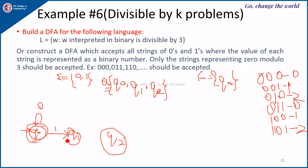After a 1, if you read a 0, the number becomes 2 and the remainder is 2, so it should go to state Q2. For 011, the remainder is 0, so on input 1 from Q2, it should go back to the start state Q0.